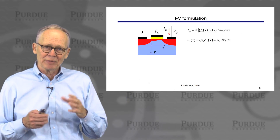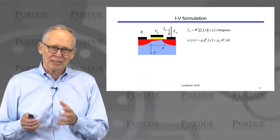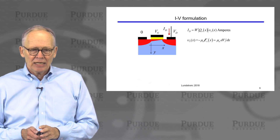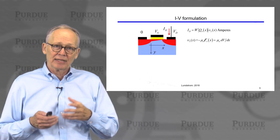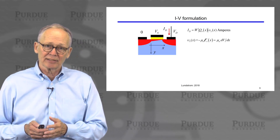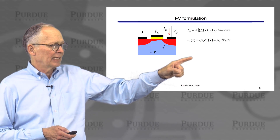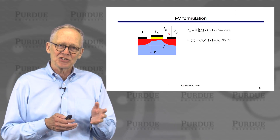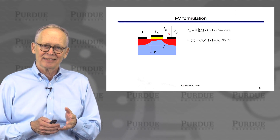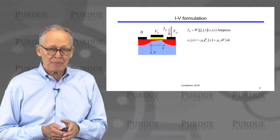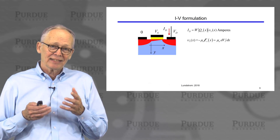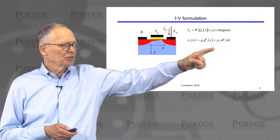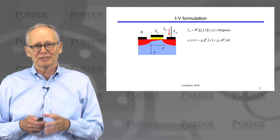How do we formulate this? We remember that current is charge times velocity, and it's also proportional to the width. We're thinking of velocity as due to an electric field sweeping the electrons along the channel. The velocity is minus mobility times electric field — minus because this is an N-channel transistor and the charge carriers are negatively charged electrons. Since electric field is minus the gradient of the electrostatic potential, I can also write the velocity as proportional to dV/dx.